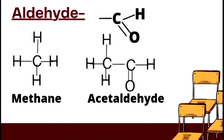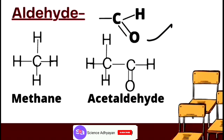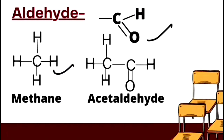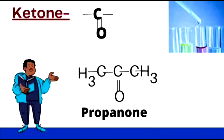The next group is the CHO group, which is called the aldehyde group. Here is methane as an example. The hydrogen is removed from methane, the CHO group is attached, and the compound formed is called acetaldehyde.